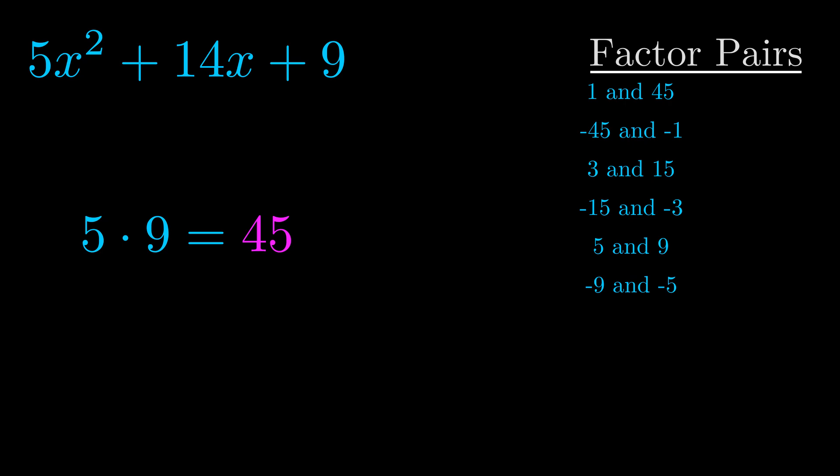The b value is the coefficient on the x term. That's the middle term, the one that we haven't done anything with yet. And really this is the only factor pair that we need.